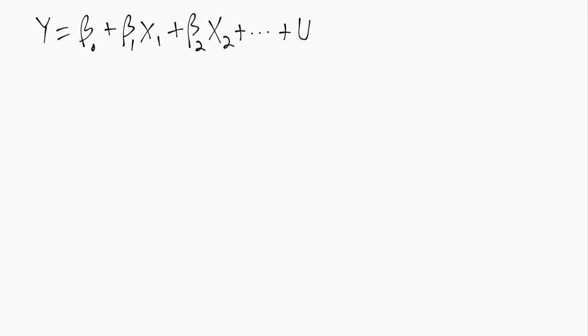In this case we're just trying to think about how this beta 1 slope coefficient is interpreted in terms of the relationship between y and x1 mathematically.